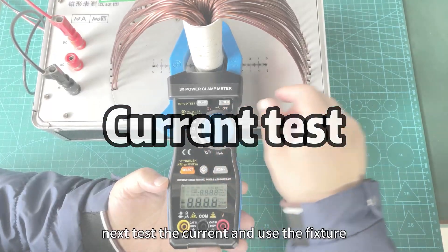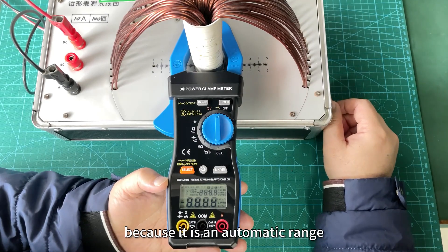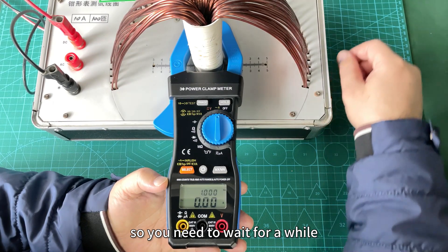Next, test the current and use the fixture. Because it is in automatic range, you need to wait for a while.